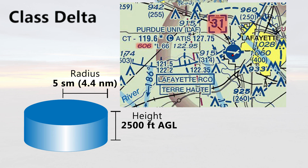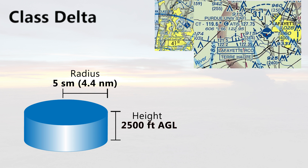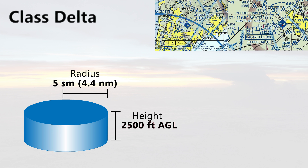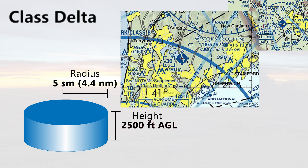3,100 minus 600 gives us the 2,500 feet AGL height of the Class D. Remember, sectional chart altitudes are always in MSL, or above sea level, but that's a different lesson. Another example of Class D is White Plains, New York. It has the normal height of 2,500 feet AGL, which we can see from the 3,000 feet MSL ceiling and an airport elevation of 439 feet.